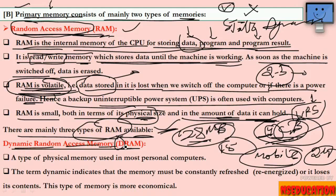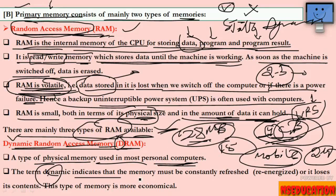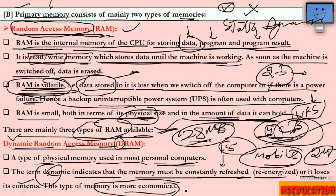One type is DRAM — Dynamic Random Access Memory — used mostly in personal computers. Dynamic means the memory must be constantly refreshed and re-energized. If not refreshed, it loses its content. This type of memory is more economical, which is why it is used in personal computers.